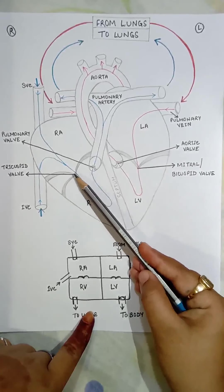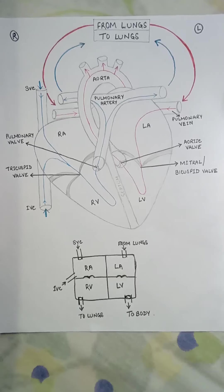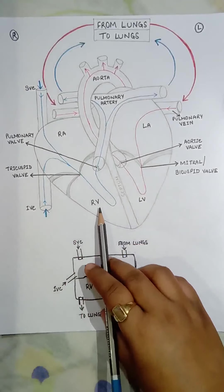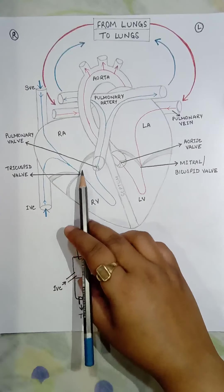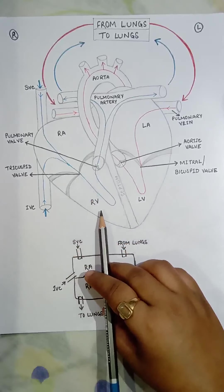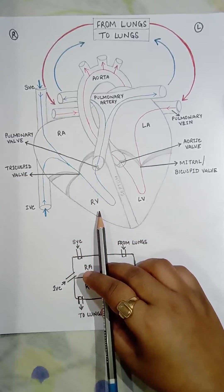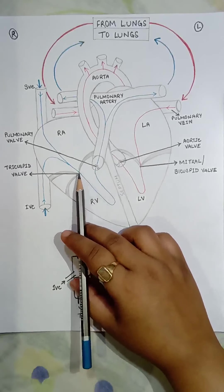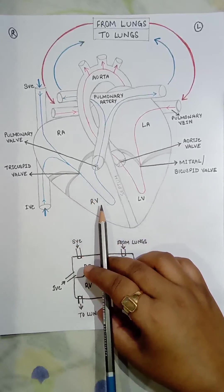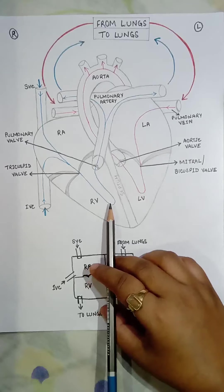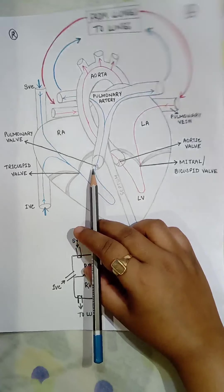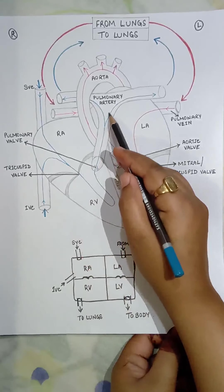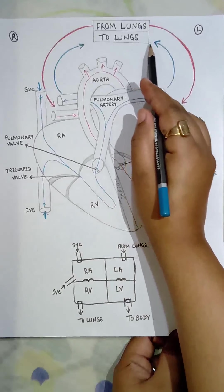As soon as blood flows into the right ventricle, the tricuspid valve shuts immediately to prevent backflow. When the right ventricle contracts, the blood is pushed through the pulmonary artery. The deoxygenated blood travels up through the pulmonary artery to the lungs.